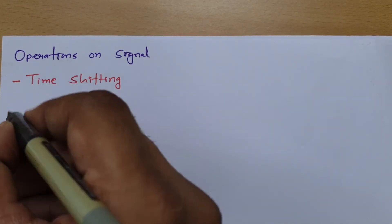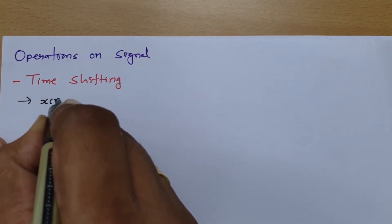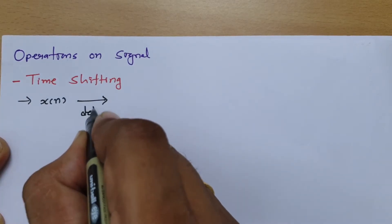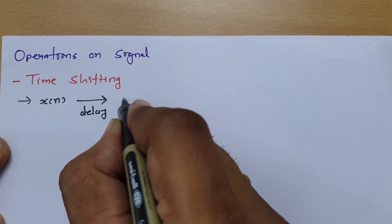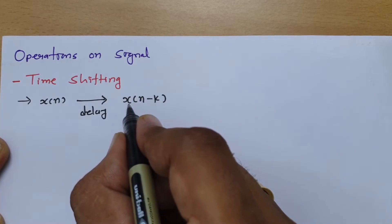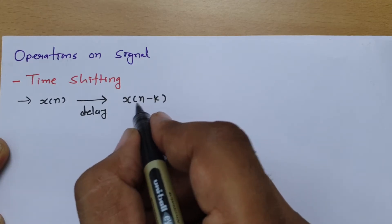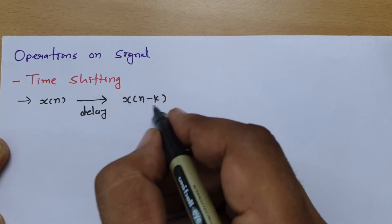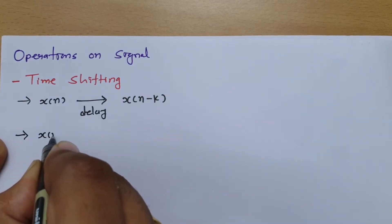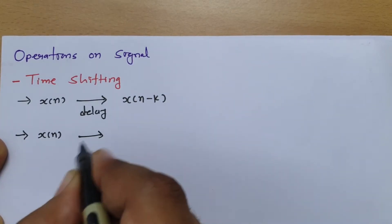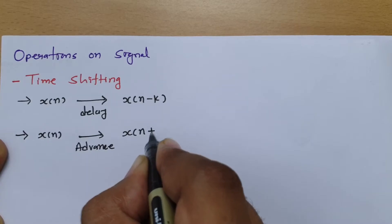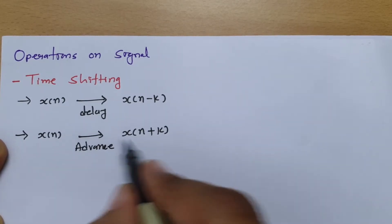When we have any signal x of n and we want to delay it, we perform a delay operation by writing x of n minus k. So x of n minus k delays x of n by k time periods. If we want to advance the signal, we write x of n plus k, which advances x of n by k.